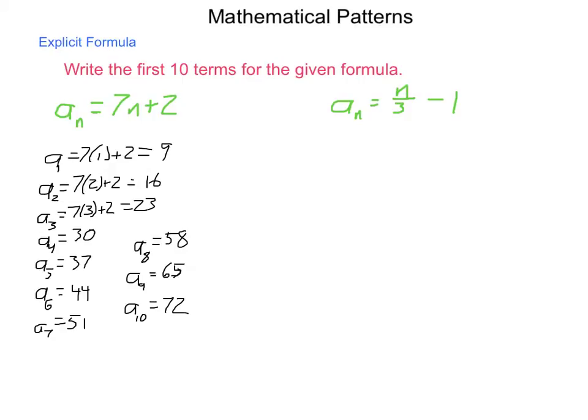I can just substitute in the number 20 for n and then run through my formula. I don't have to build all the terms previous to it to get to where I want to be.